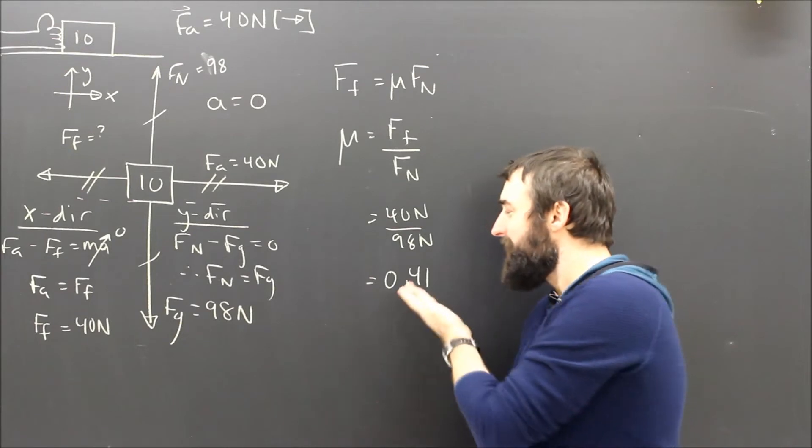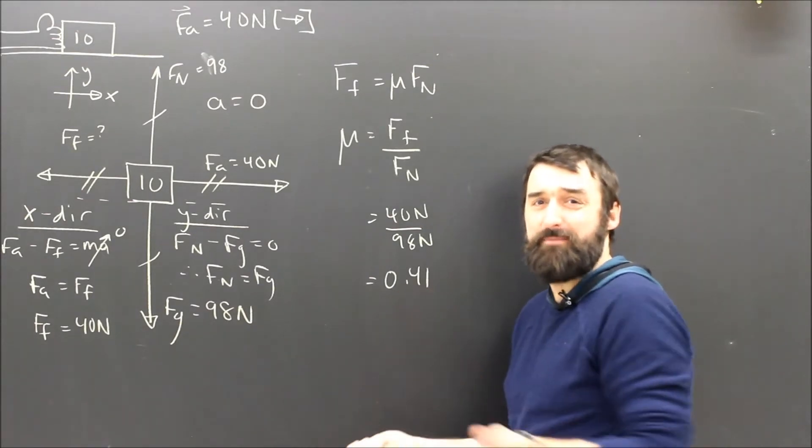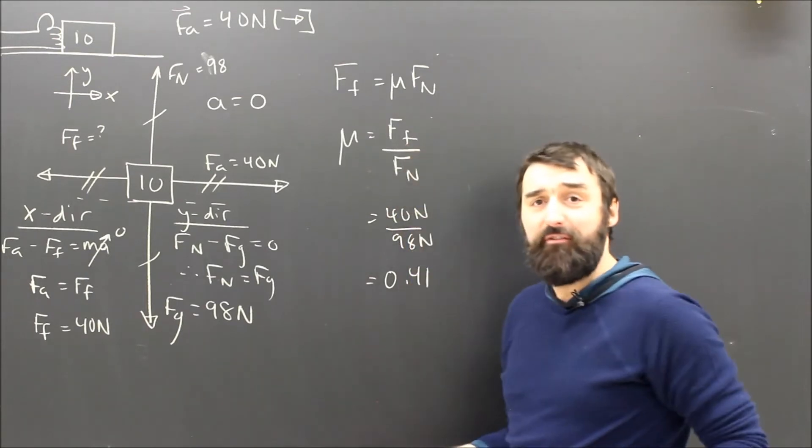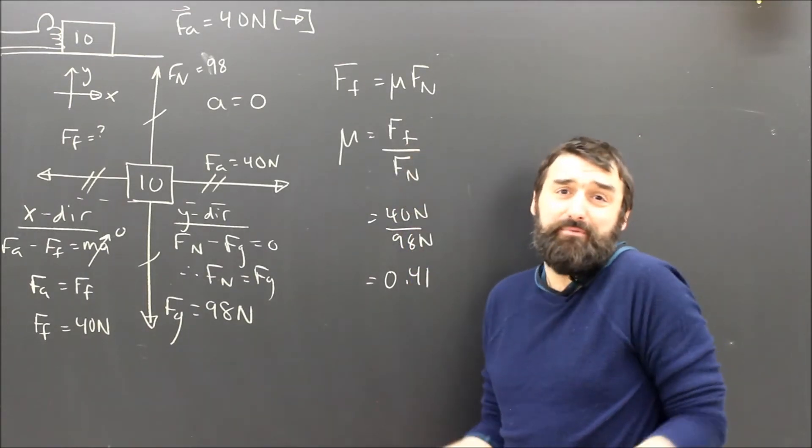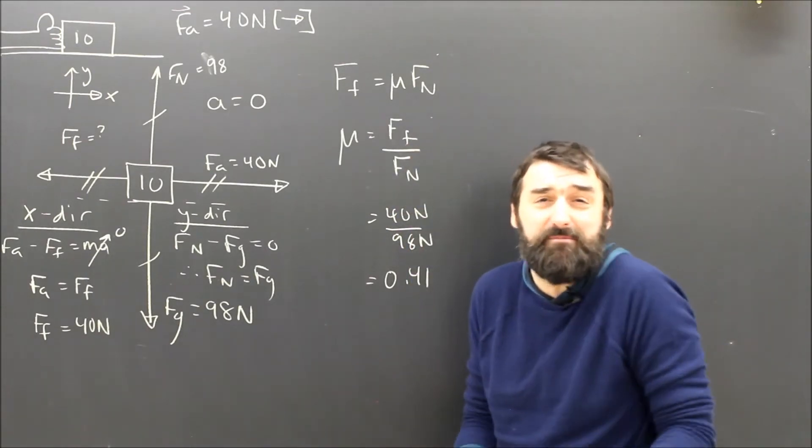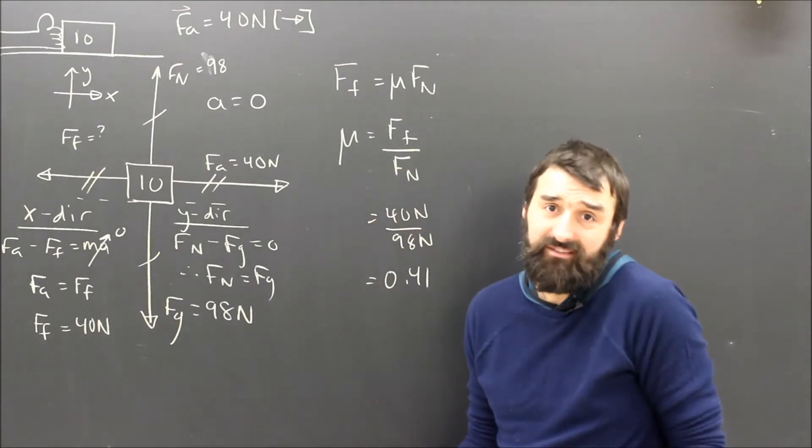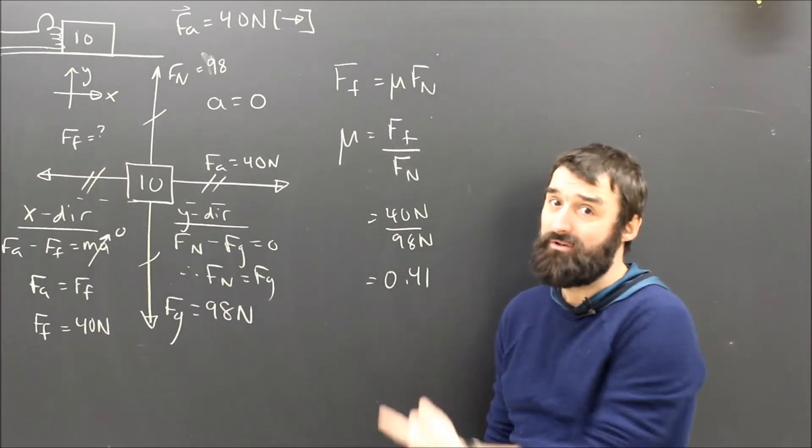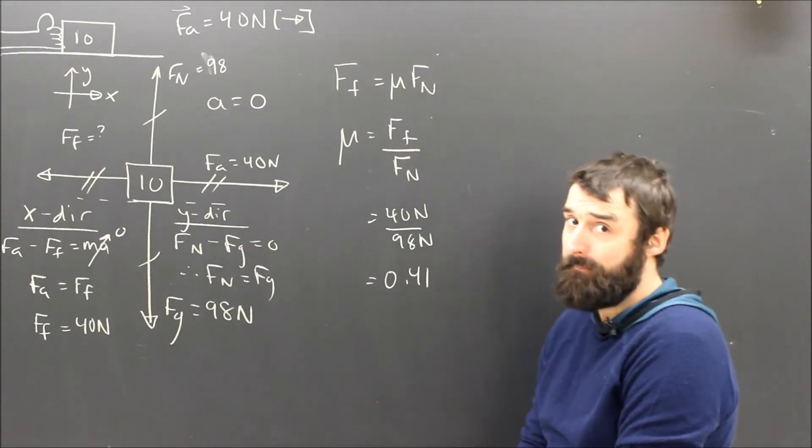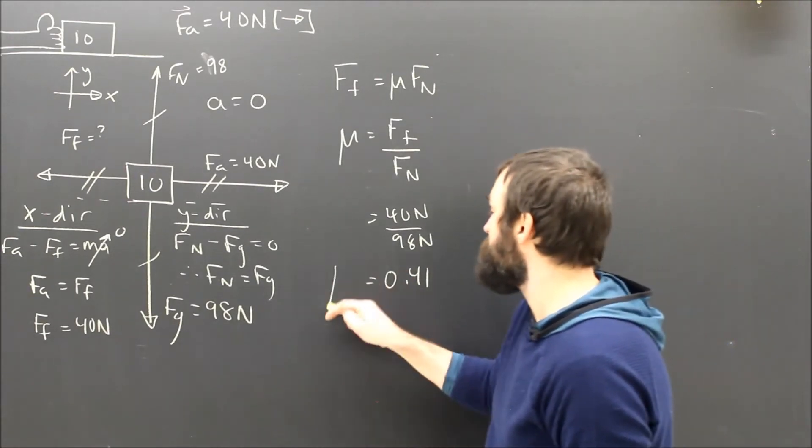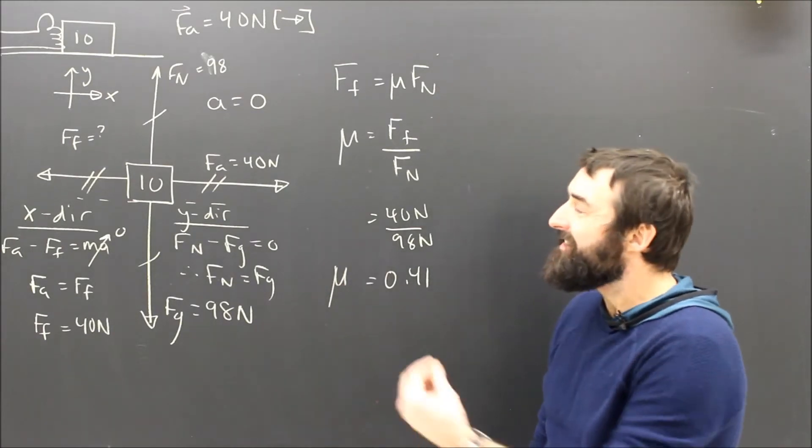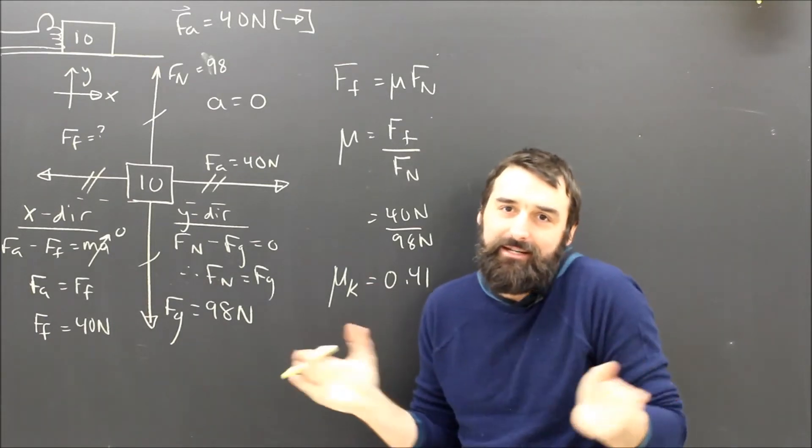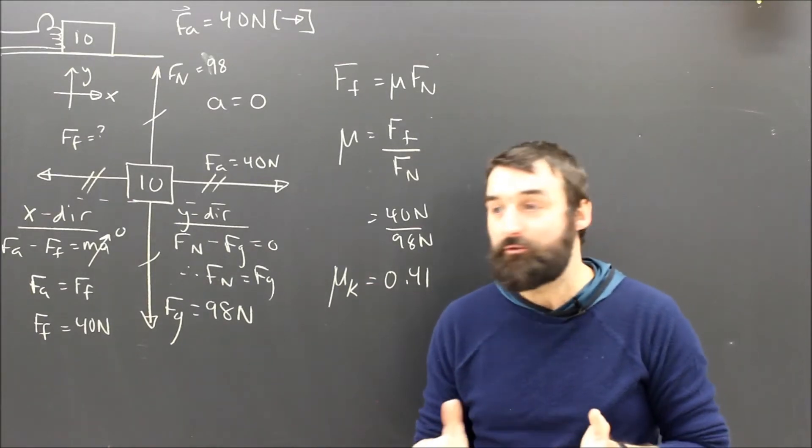So FF is of course 40 newtons out of 98 newtons and that means about 0.41. I haven't mentioned this before, but we could just think of mu as a percentage, right? What percent of FN is FF? And if you think of mu as a percentage, how big is FF as a percent of FN, then it's really hard to forget the formula because percentages are really easy, right? If you got 40 out of 98 on a test, you would know that you failed. So mu is equal to 0.41. This thing is sliding at a constant speed, so that is mu K technically, but that's not too important in this question.